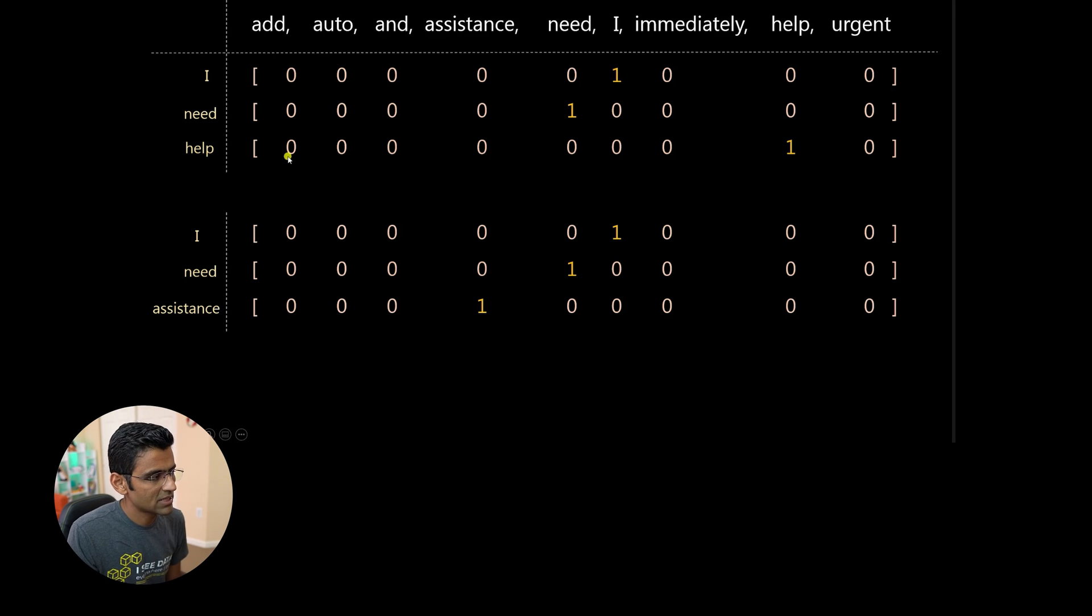See in help, I have all these zeros and one is at this position. Assistance again, I have all these zeros and assistance, here I have one.